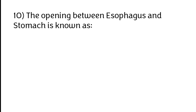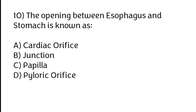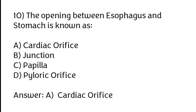The opening between the esophagus and stomach is known as: A) Cardiac orifice, B) Junction, C) Fibella, D) Pyloric orifice. The correct answer is option A, cardiac orifice.